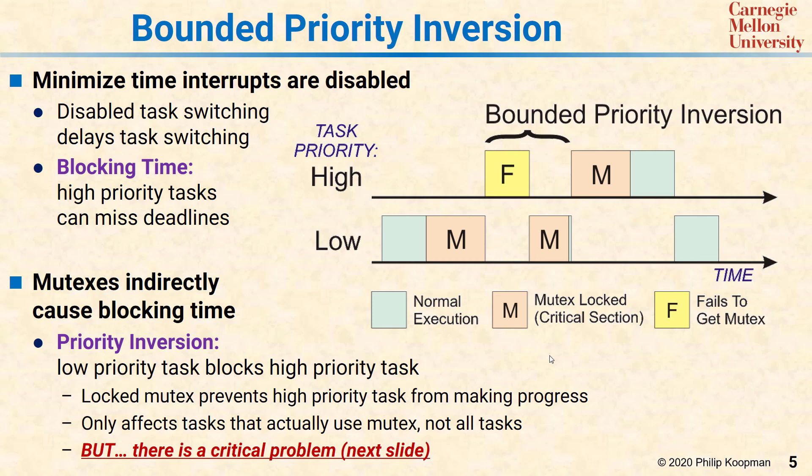But there's a critical problem — this picture is overly simplistic because it omits a special case that can cause the high priority task to have unbounded priority inversion, and we'll get to that on the next slide.